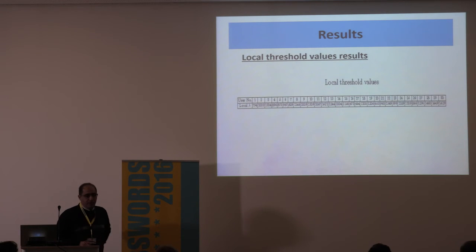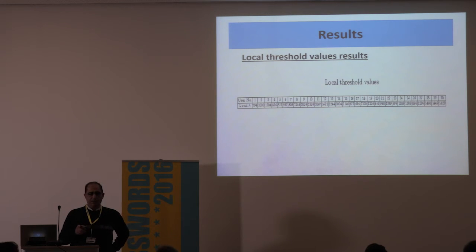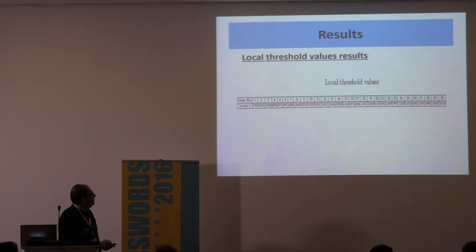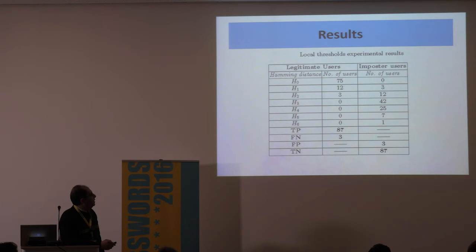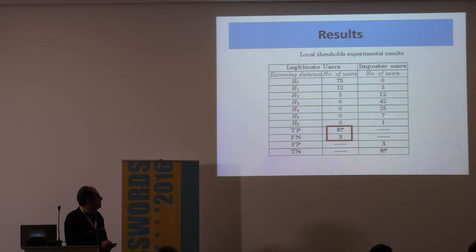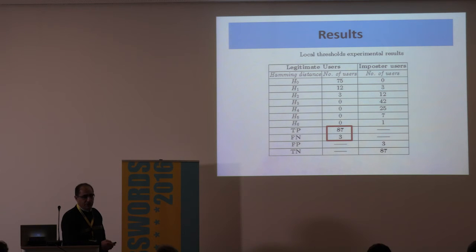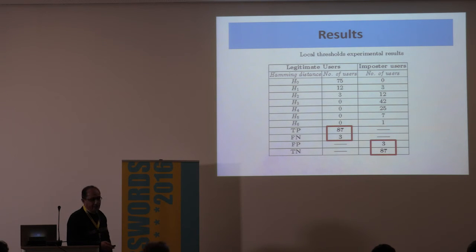For local threshold results, we calculated the average latency time for each of the 30 students and classified accordingly. The experiment results show that for legitimate users we have 87 true positives and 3 false negatives — 87 out of 90 were correctly admitted. For imposter users, we have 3 false positives and 87 true negatives.